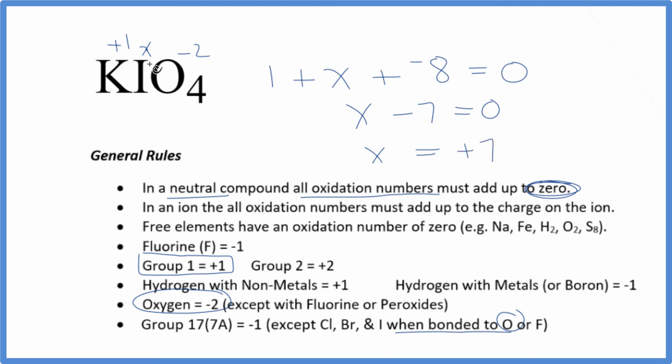So the oxidation number on the iodine in KIO4, that's going to be plus 7. If you add up all the oxidation numbers on each atom here, it'll equal zero. This is Dr. B, and thanks for watching.